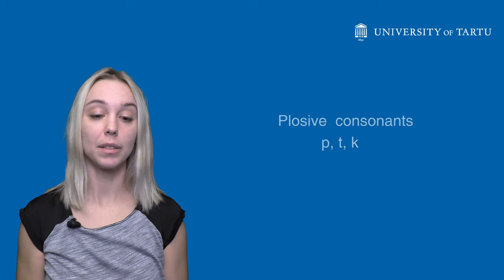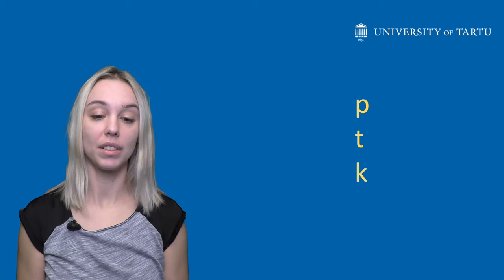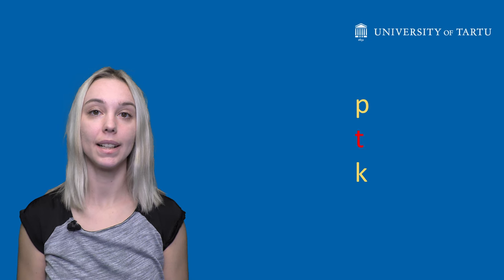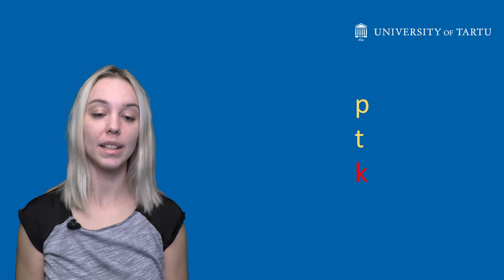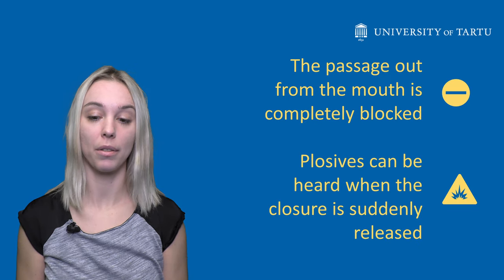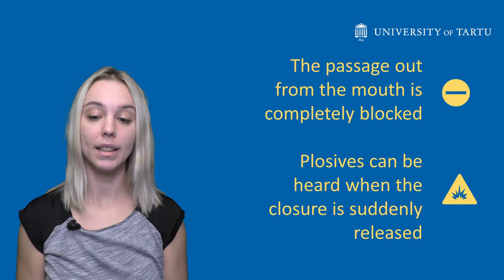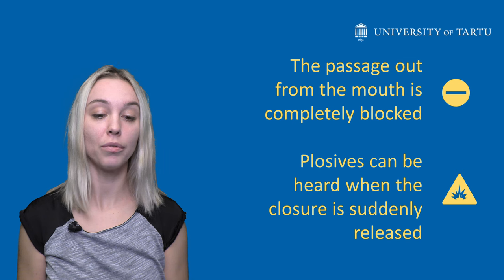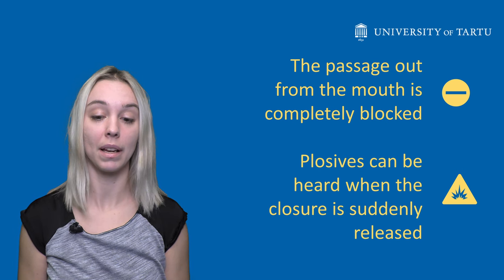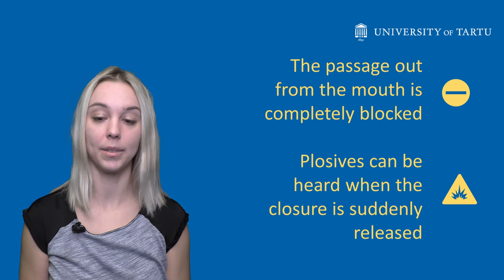This video explains the pronunciation of the Estonian plosive consonants p, t, k. Plosives are consonants that are pronounced with a full closure in the mouth. These consonants can be heard once pressure that builds up behind the closure is released.